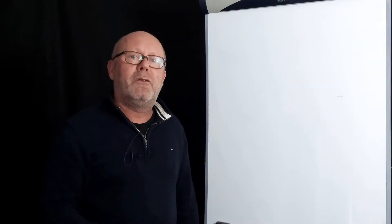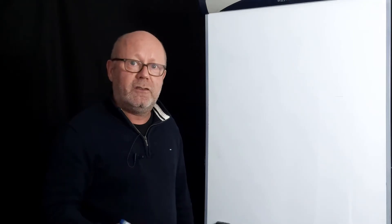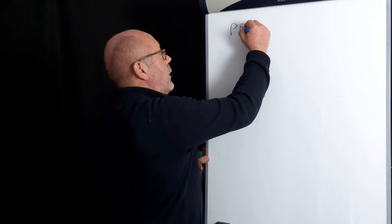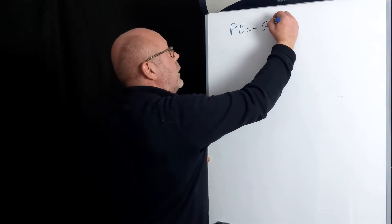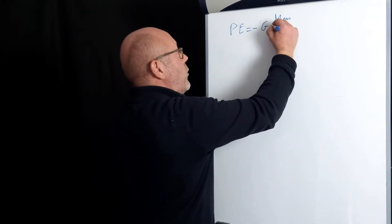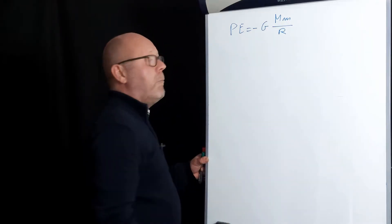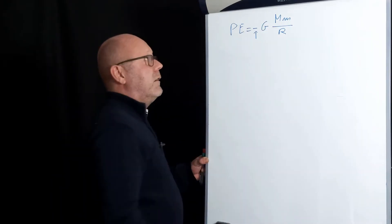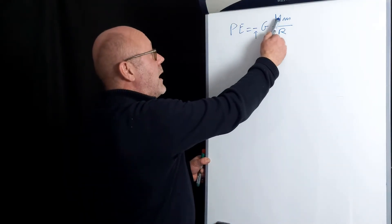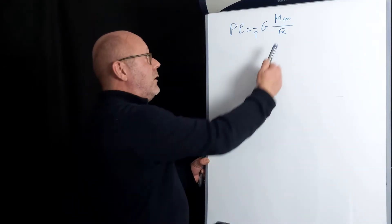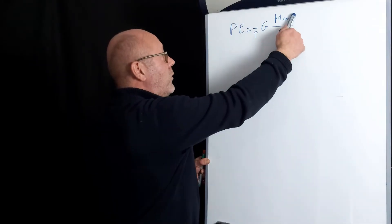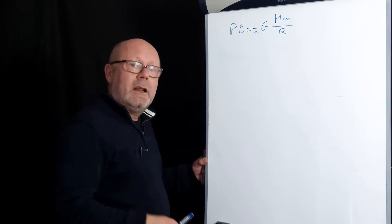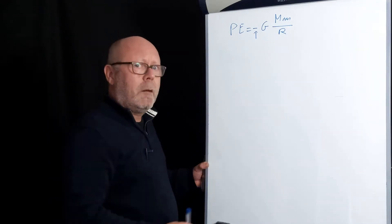The mathematical expression for the gravitational potential energy of a system of two masses is written like this. It's proportional to the product of the masses and inversely proportional to the distance between them. The question is about this minus sign here. You see that big M and little m are always positive, distance always positive, so this block is always positive, therefore the potential energy is always negative.